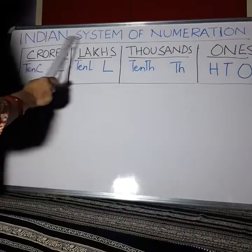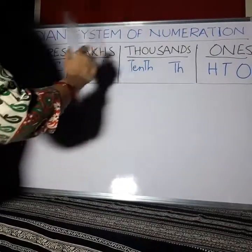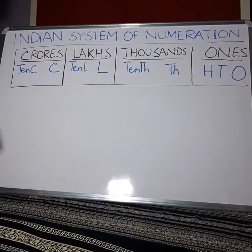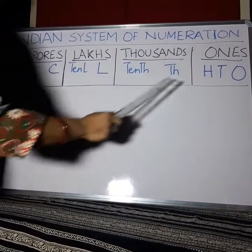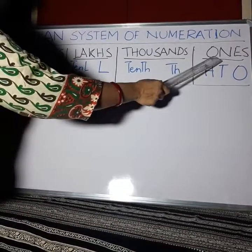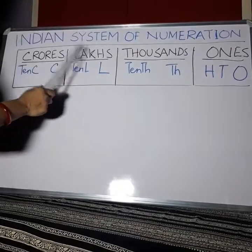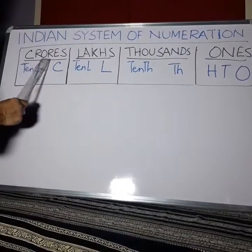Indian System of Numerations. In the Indian System of Numerations, we have periods like Ones, Thousands, Lakhs, and Crores.